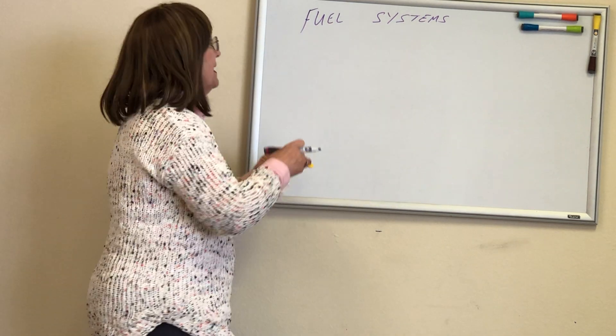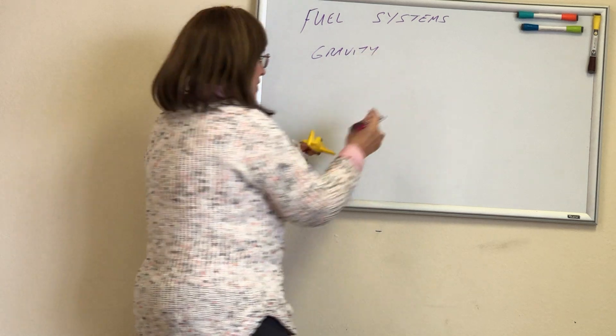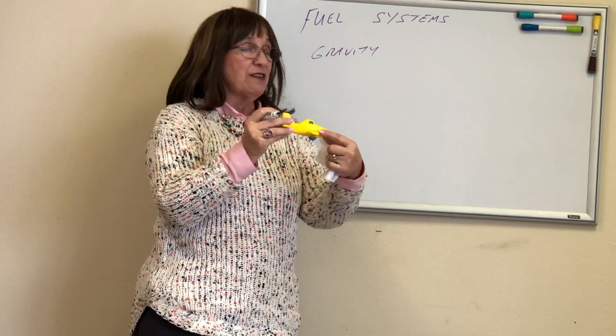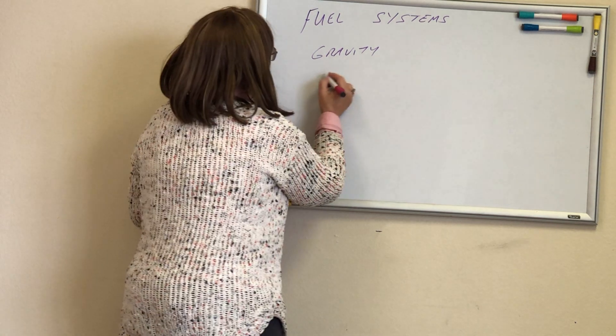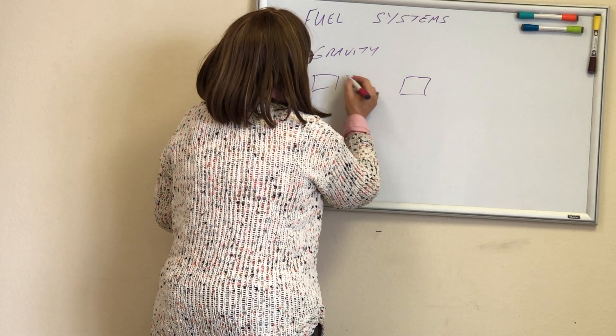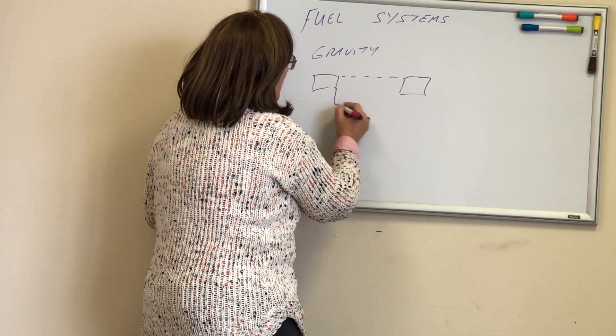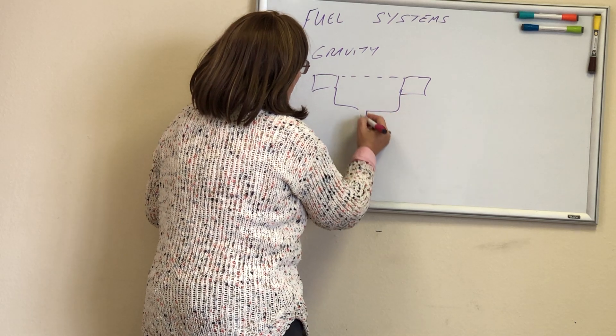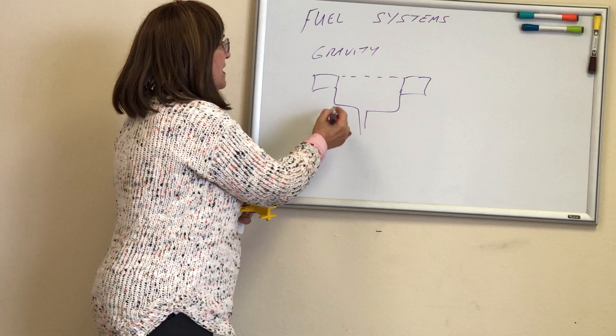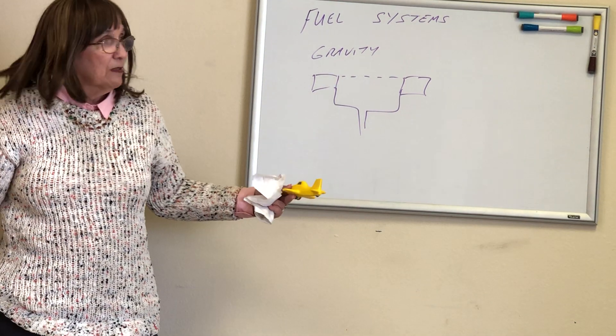On a high wing airplane, we have gravity. So if I had a high wing airplane, the gravity feeds down. We'll typically have a left tank and a right tank and generally there's a crossover, but both of them come down and they feed and it goes to the carburetor.